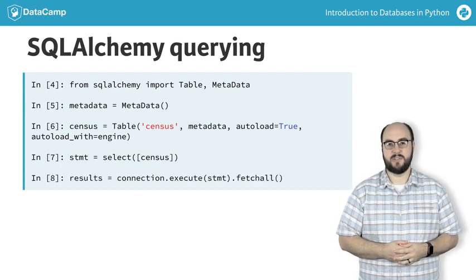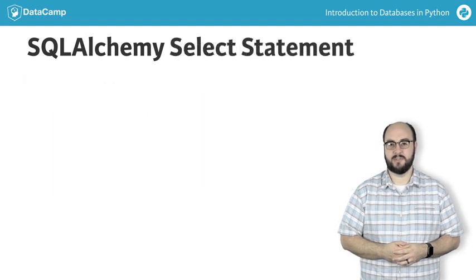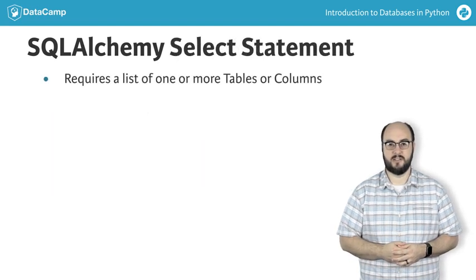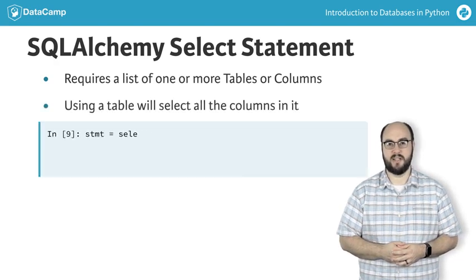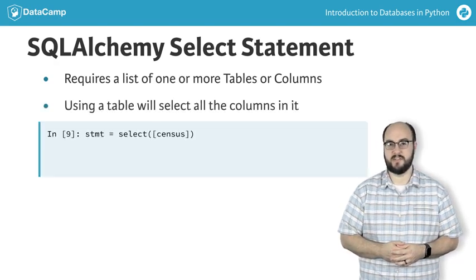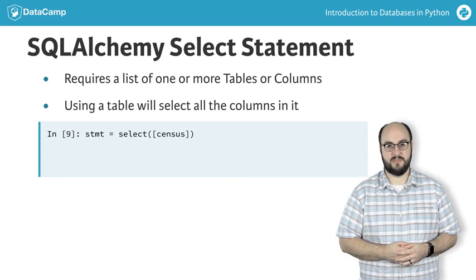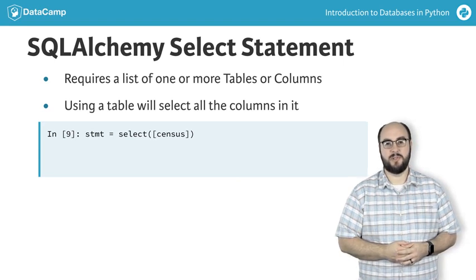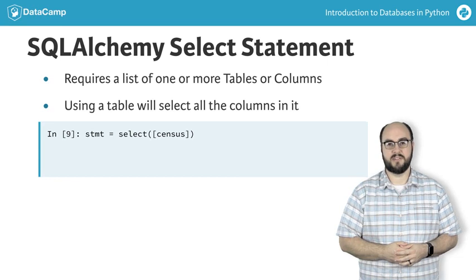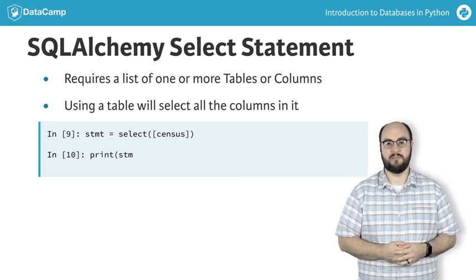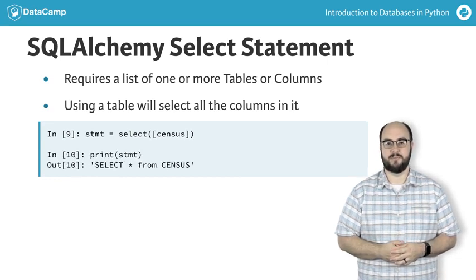The SQLAlchemy select statement works the same as a SQL SELECT statement and in its most basic form takes a list of column or table objects. For example, statement equals select with a list of census will select all of the columns of all of the rows in the census table. SQLAlchemy generates the same SQL statement we wrote by hand, and we can see that by using the print function on the statement, which outputs 'select star from census'.